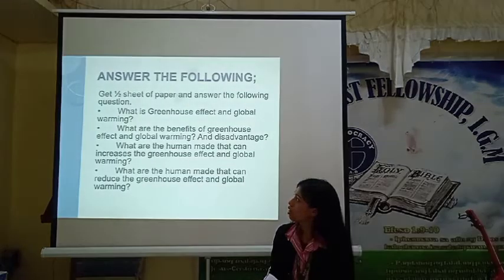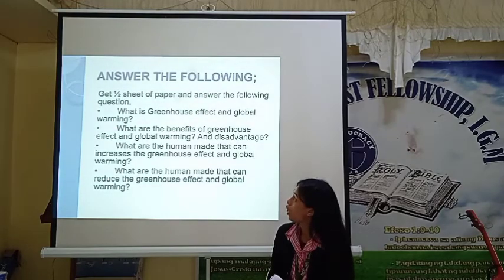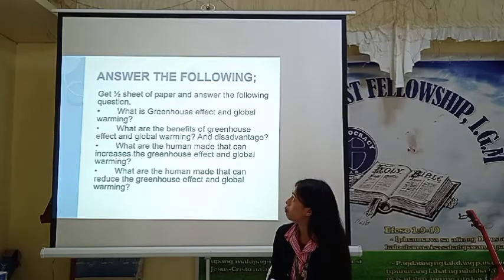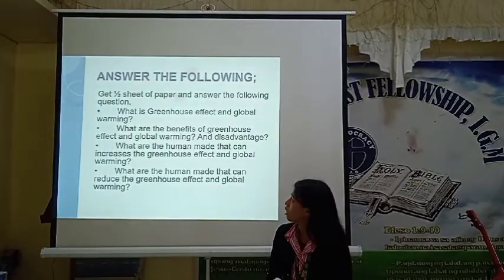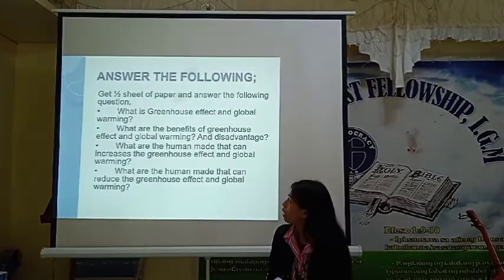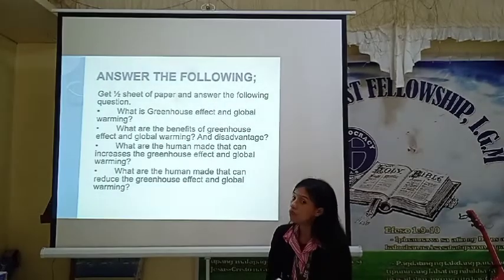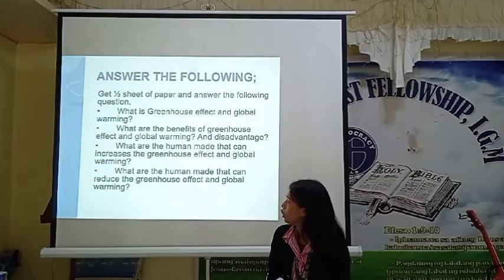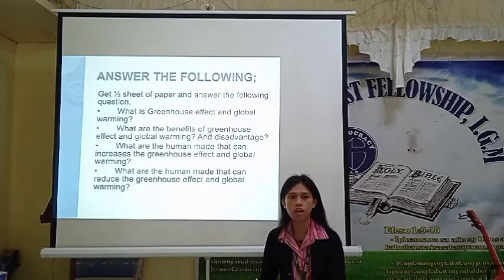I have here another activity for you. Class, get one half sheet of paper and answer the following questions. Number one: What is the greenhouse effect of global warming? Number two: What are the benefits and disadvantages of the greenhouse effect and global warming? Number three: What are the human-made factors that can increase the greenhouse effect and global warming? Number four: What are the human-made factors that can reduce the greenhouse effect and global warming? I will give you five minutes to answer this.